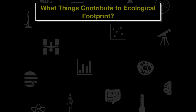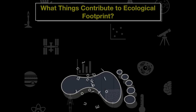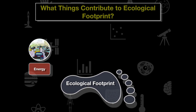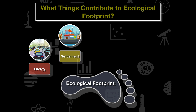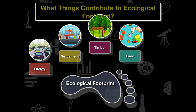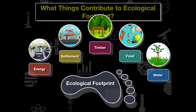What are the main contributing factors to our ecological footprint? We need to think about our energy use, our settlement use — where we build our homes — our forest product use including timber and paper, our food use, and our water use. All five of these things are included in our calculations for the ecological footprint.